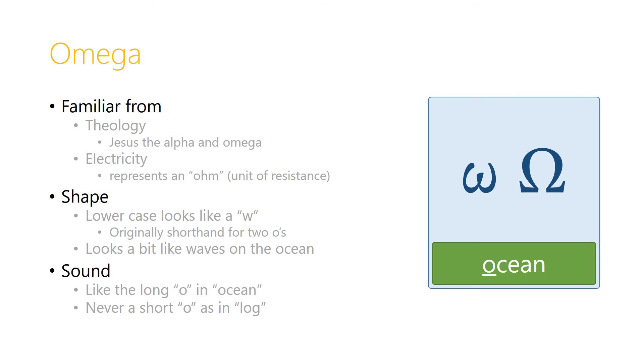The shape of the lowercase looks like a curvy w. Now, this was originally a shorthand for two o's, and it might also look a bit like the waves on the ocean. And connecting the lowercase omega to ocean can help us to remember that it makes that long o sound. It never makes the short o sound, as in log. That's always the omicron. It always makes the o sound.